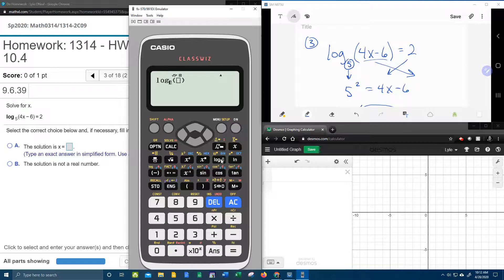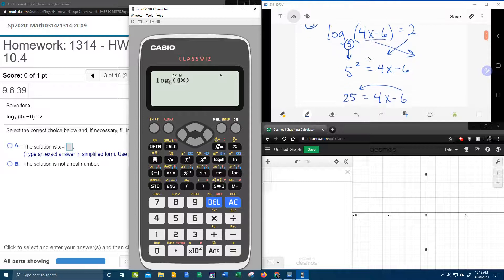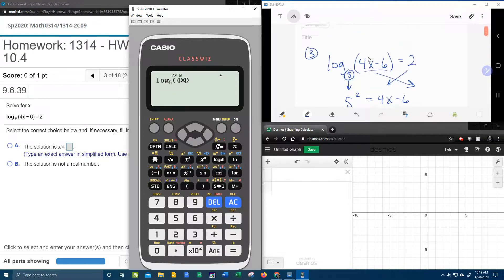Here's our original problem. We're going to put in log base 5 of 4 times. Now, remember x, we found x to be 31 fourths.